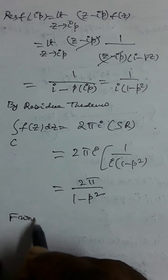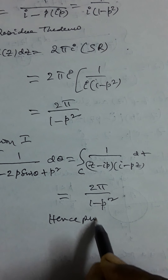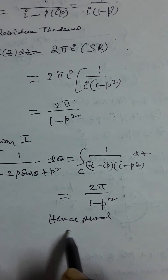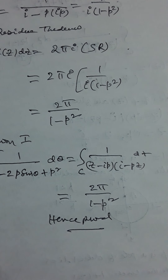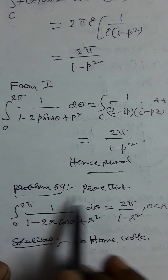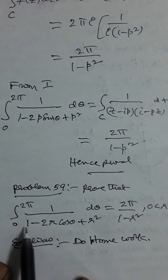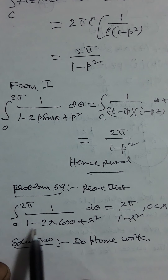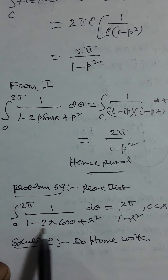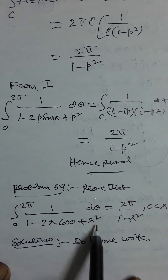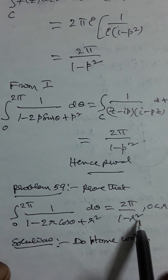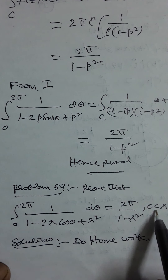Therefore, from equation (1), the integral from 0 to 2π of 1/(1 − 2p sinθ + p²) dθ = 2π/(1 − p²). Hence proved.